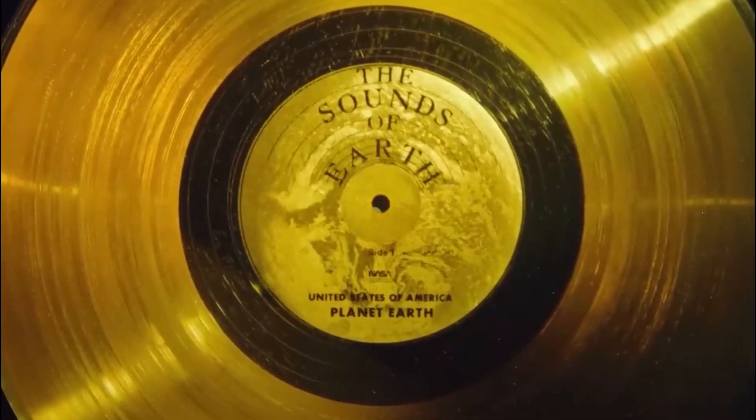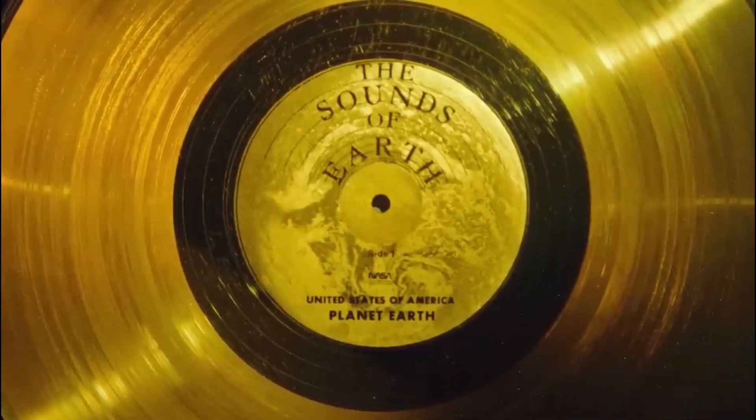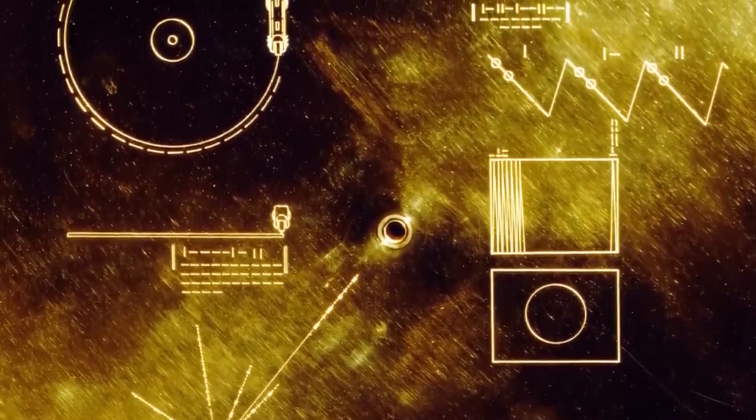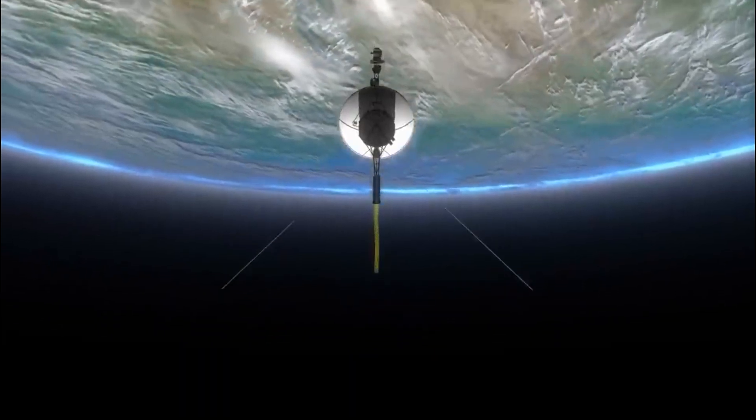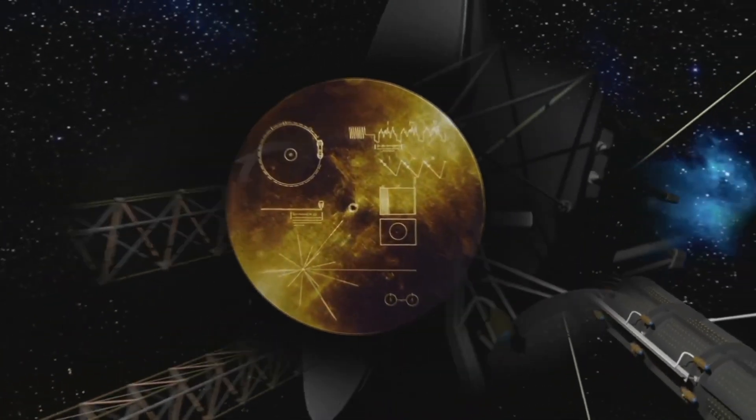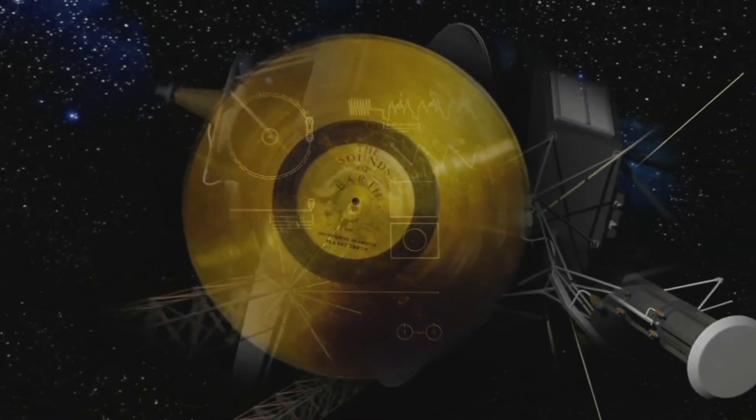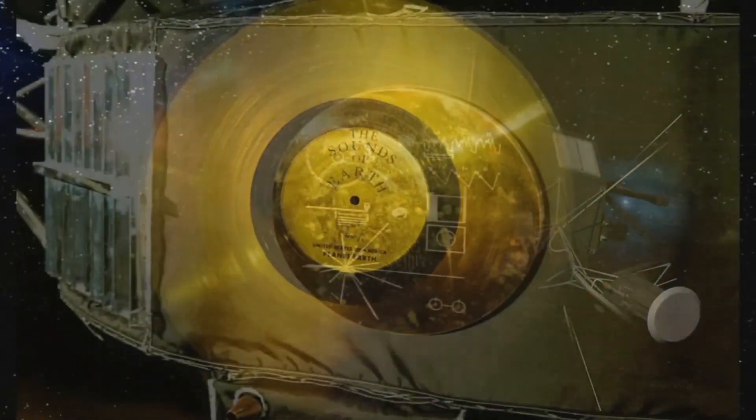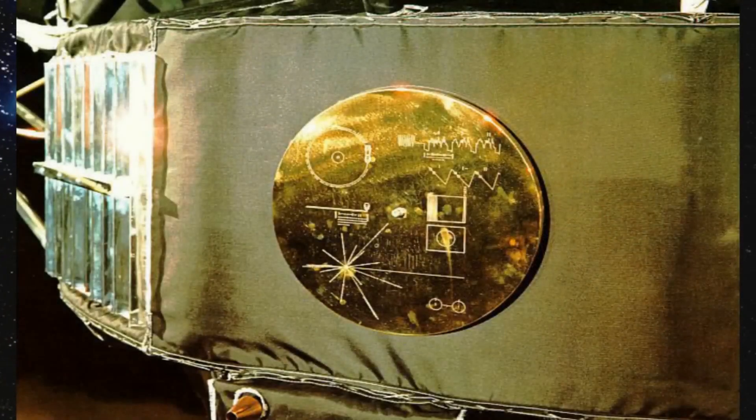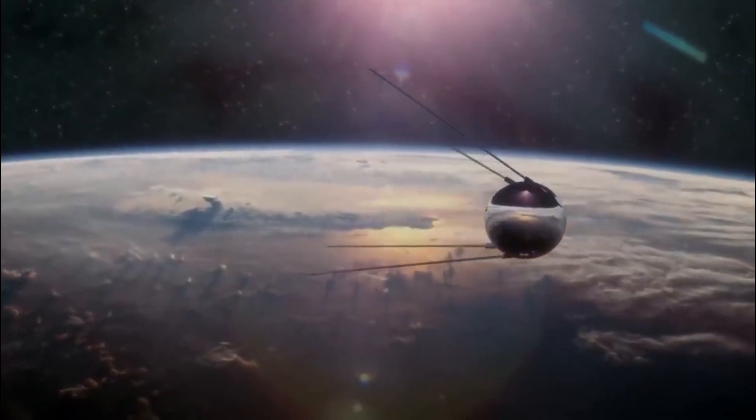Each spacecraft also acts as an ambassador for humanity, carrying a gold record with musical recordings, readings in different languages, images of life on Earth, and diagrams of basic scientific principles intended for whoever might encounter these probes. The gold coating on the records acts as a cosmic message in a bottle, as its resistance to corrosion in space will allow the information they contain to remain intact for more than a billion years.